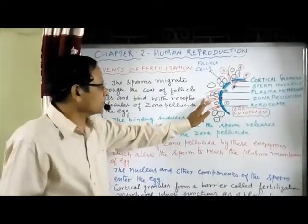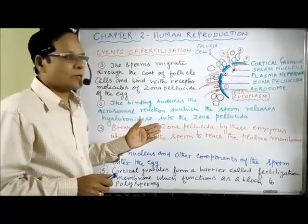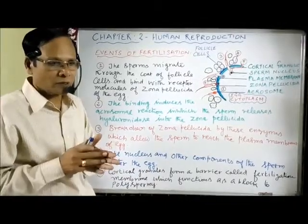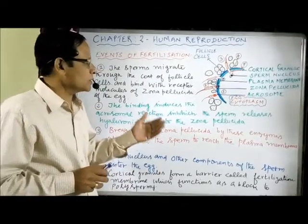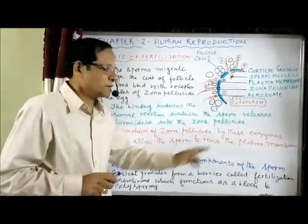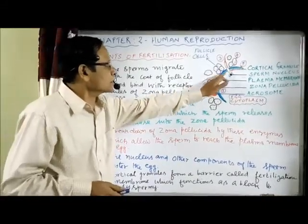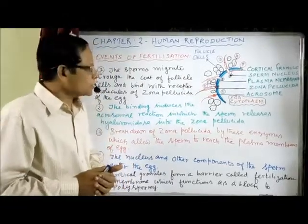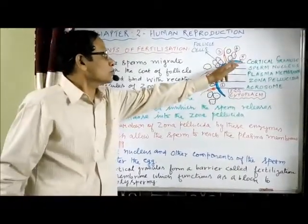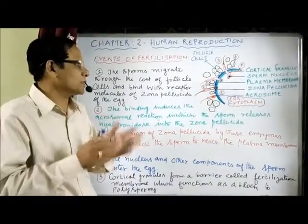The breakdown of the zona pellucida by enzymes including hyaluronidase allows the sperm to reach the surface of the plasma membrane. Event four: the nucleus and other contents of the sperm are released into the ooplasm. Only the sperm head enters the ooplasm; the middle piece and tail are left out.